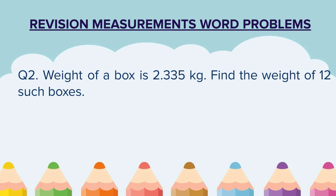Question 2. The weight of a box is 2.335 kg. Find the weight of 12 such boxes. The weight of 1 box is given and we have to find the weight of 12 boxes.